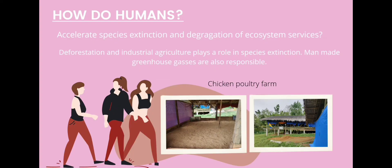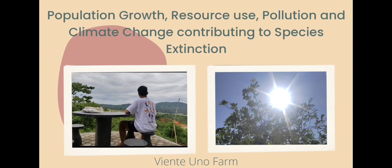How do humans accelerate species extinction and degradation of ecosystem services? Deforestation and industrial agriculture play a role in species extinction, and man-made greenhouse gases are also responsible. Population growth, resource use, pollution, and climate change all contribute to species extinction.